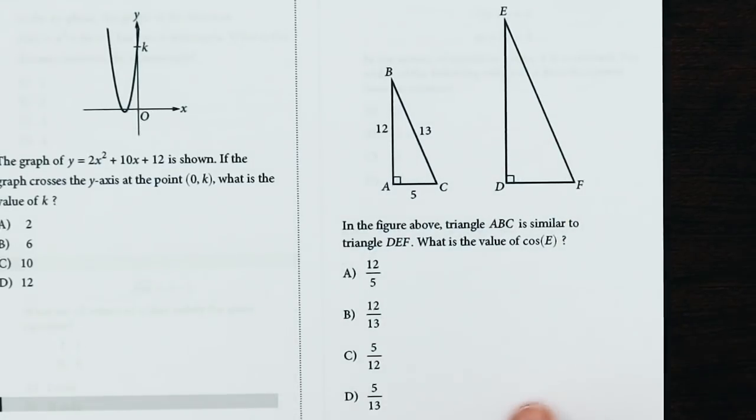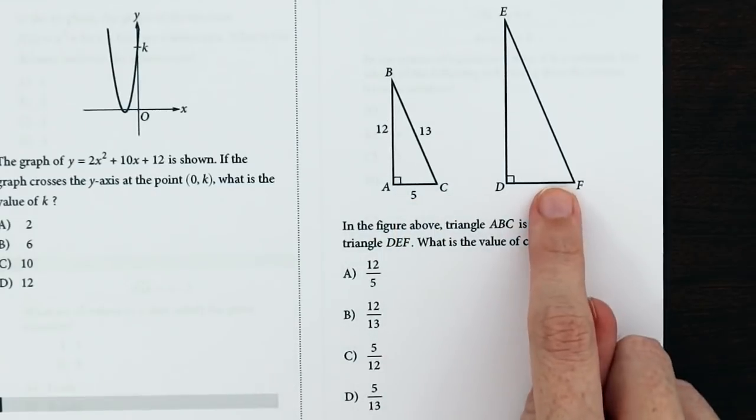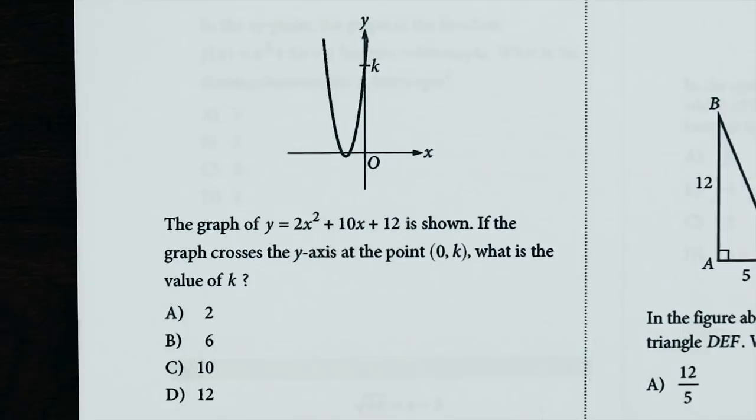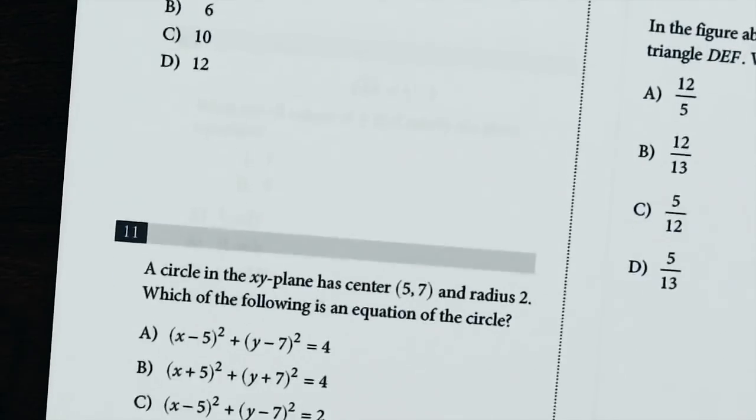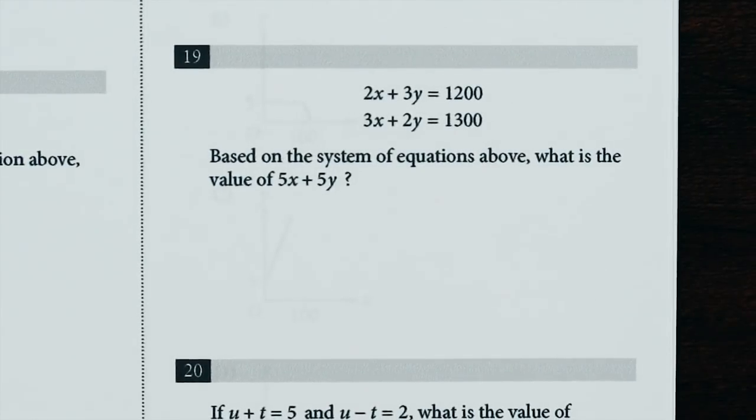This question uses trigonometry. You just need to find the cosine of an angle and know that a similar triangle will have similar angles. There's questions about parabolas, circles, and simultaneous equations.